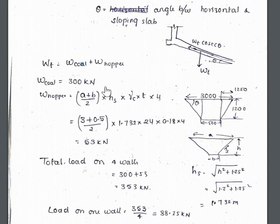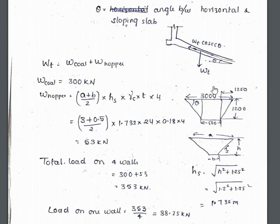The total weight — weight of the coal — is given as 300 kilonewtons. You may get doubt: when we are designing the hopper bottom, why we are not taking the weight of the material at this portion only? It is because the total weight of the material inside the bunker is imposed upon the hopper, so we have to take the entire weight of the material here: weight of coal plus weight of the hopper.